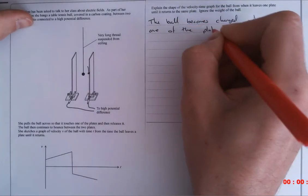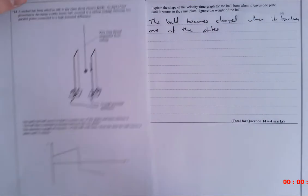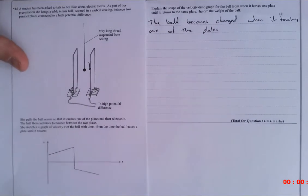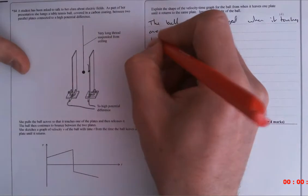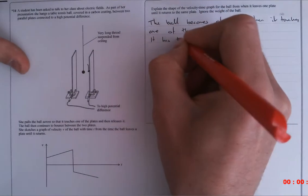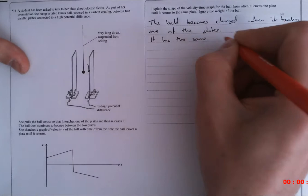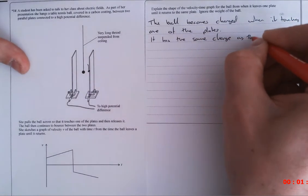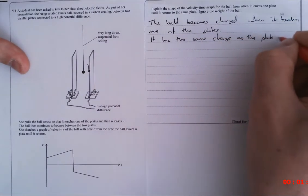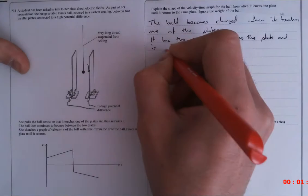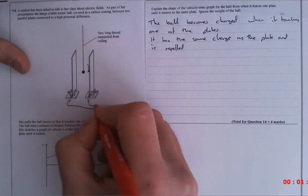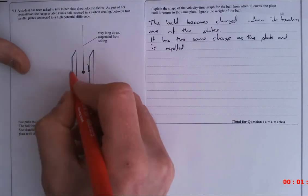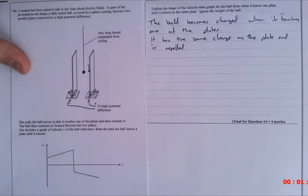The ball becomes charged when it touches one of the plates. Now, it doesn't actually matter whether it's positive or negative. Exactly the same thing will happen. It picks up a charge. So now it has the same charge as the plate and is repelled. So if it has a positive charge, because this is a positively charged plate, then it will be repelled. And if it touched this plate, because it was a negatively charged plate, it would pick up a negative charge and also be repelled.